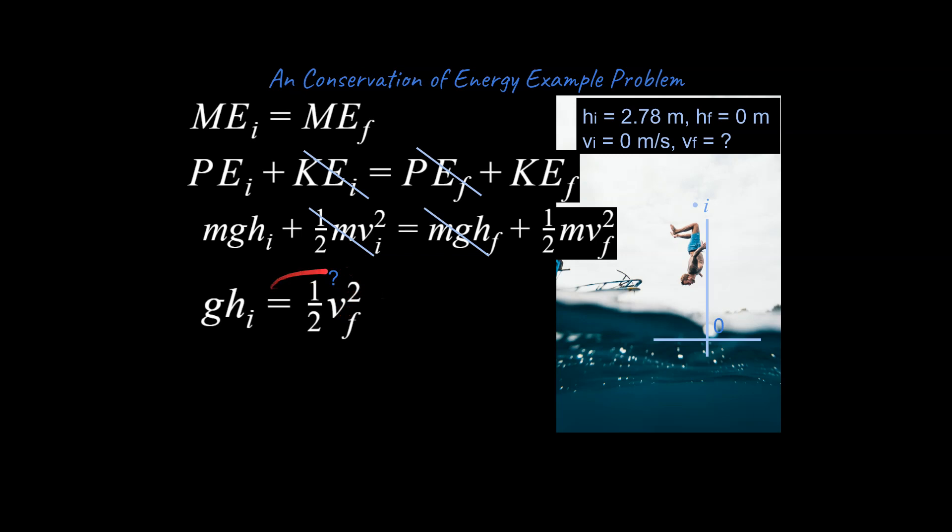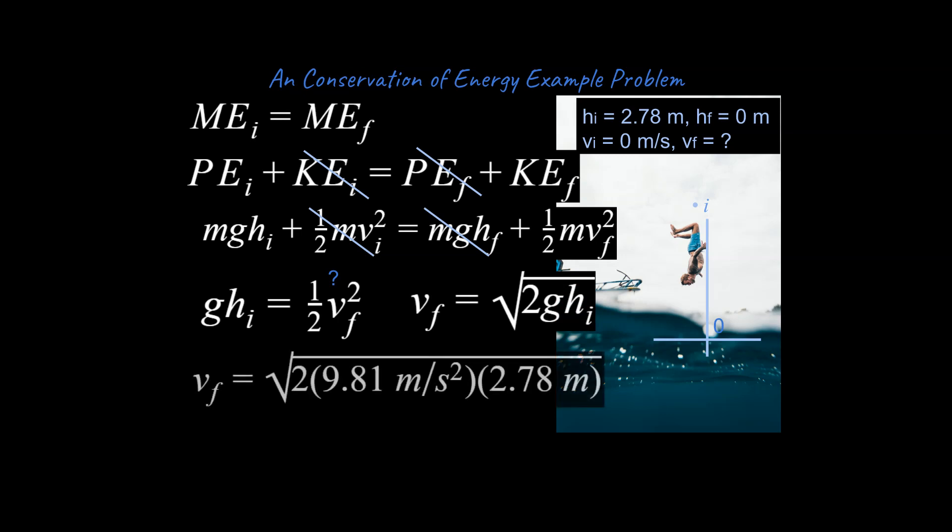So that's our unknown. I would encourage you to write a question mark by your unknown at some point in the problem and then we're just going to isolate for our unknown. Note right at the end, right as we're ready to solve, that's when we're going to plug in our numbers so we don't make mistakes. So we go ahead and plug in our numbers and we solve and we end up with 7.38 meters per second and that's it ladies and gentlemen.